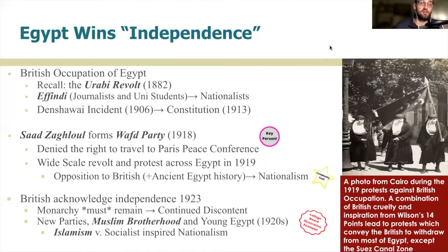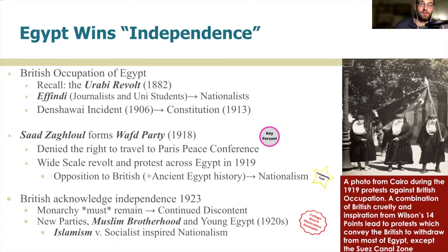Let's turn attention to Africa and Egypt, which managed to win its independence during this time. The British had been occupying Egypt since 1882, and a growing source of resistance was a class of journalists and university students known as the Efendi, who became the core of a nationalist movement. After a series of protests in 1906 led to a weak constitution in 1913, Egypt's independence movement really came to a head in 1918 when activist Saad Zaghloul formed the Wafd Party to attend the Paris Peace Conference and advocate for Egypt's right to self-determination. The British denied this and exiled Zaghloul, first to Malta and then to the Indian Ocean.